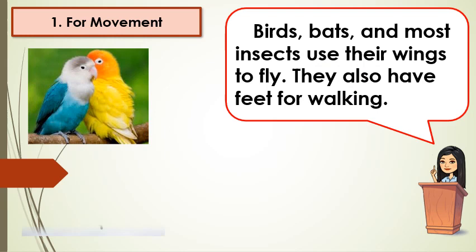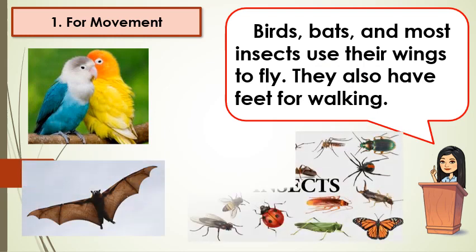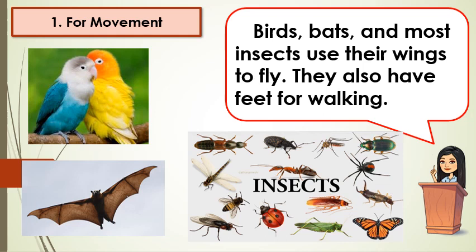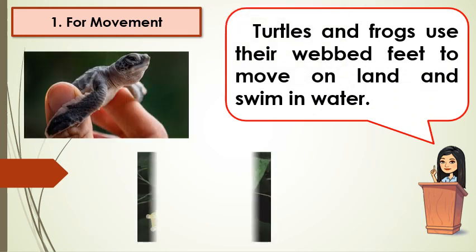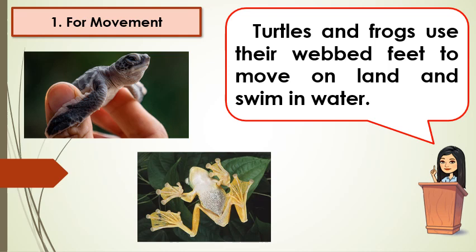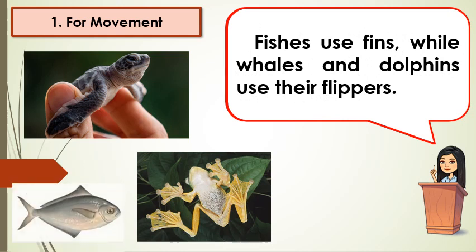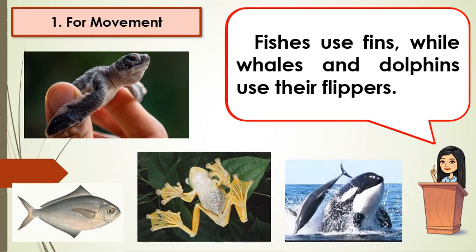Birds, bats, and most insects use their wings to fly. They also have feet for walking. Turtles and frogs use their webbed feet to move on land and swim in water. Fishes use fins, while whales and dolphins use their flippers.